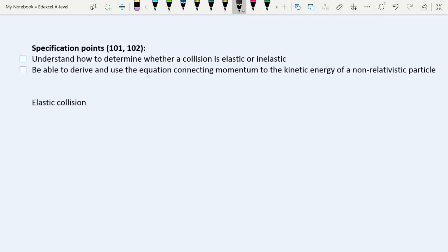This is the second in our further mechanics videos dealing with momentum. We're going to be covering specification points 101 and 102. If you're doing IAL, that's 85 and 86, but the actual physics is the same. The first one is understanding how to determine whether a collision is elastic or inelastic. We don't need to know the definitions of those, though in order to determine them, we do need to know what you're talking about, so we'll go through that.